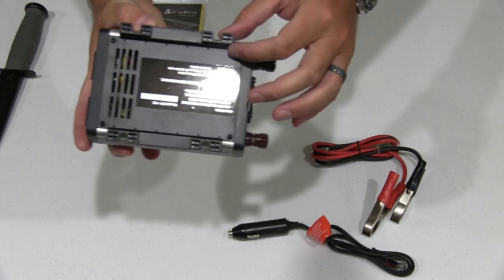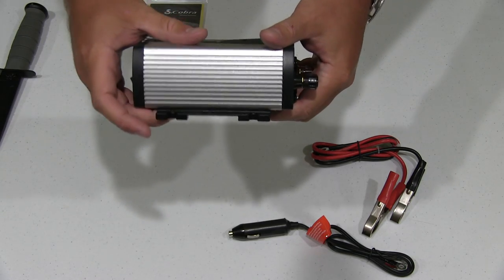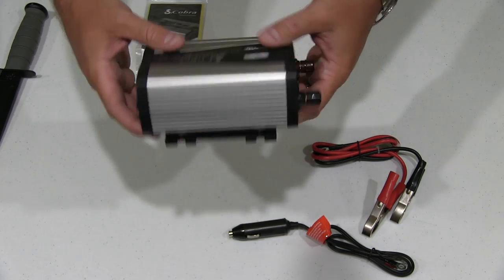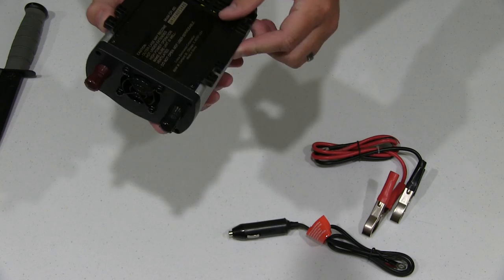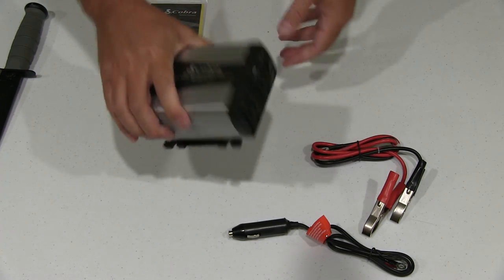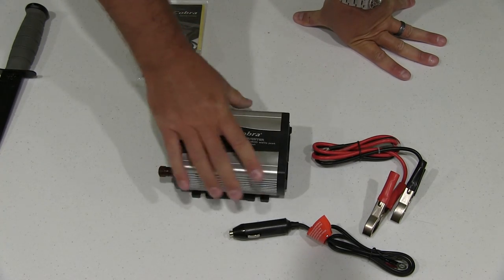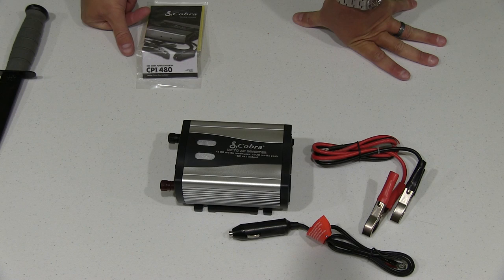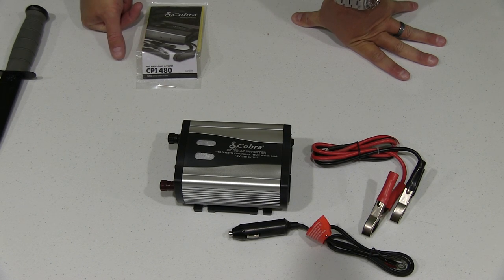And something else you'll notice—see this right here—if you wanted to wall mount or floor mount it, those little cutouts is where you could do that. So that makes it even more convenient. Like I said, the weight of it is pretty light.